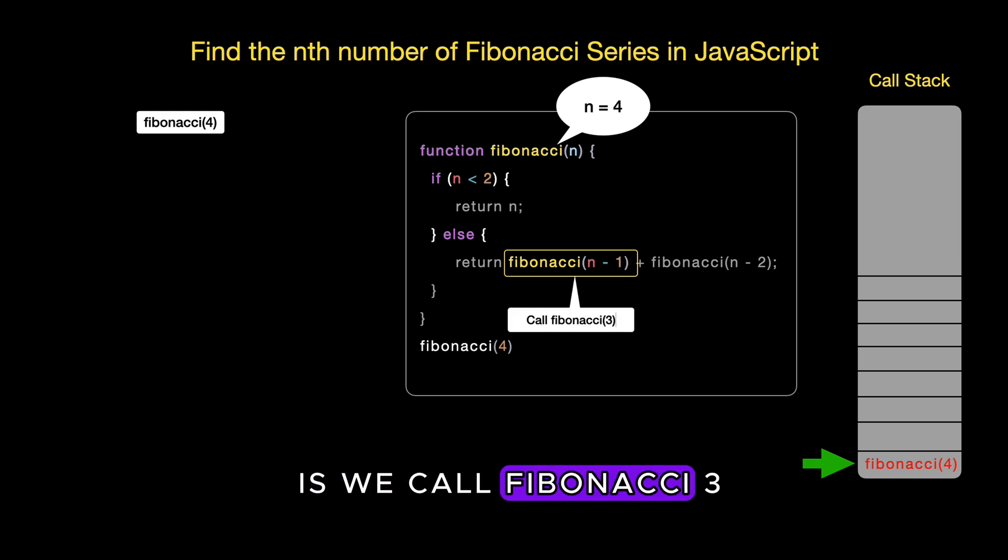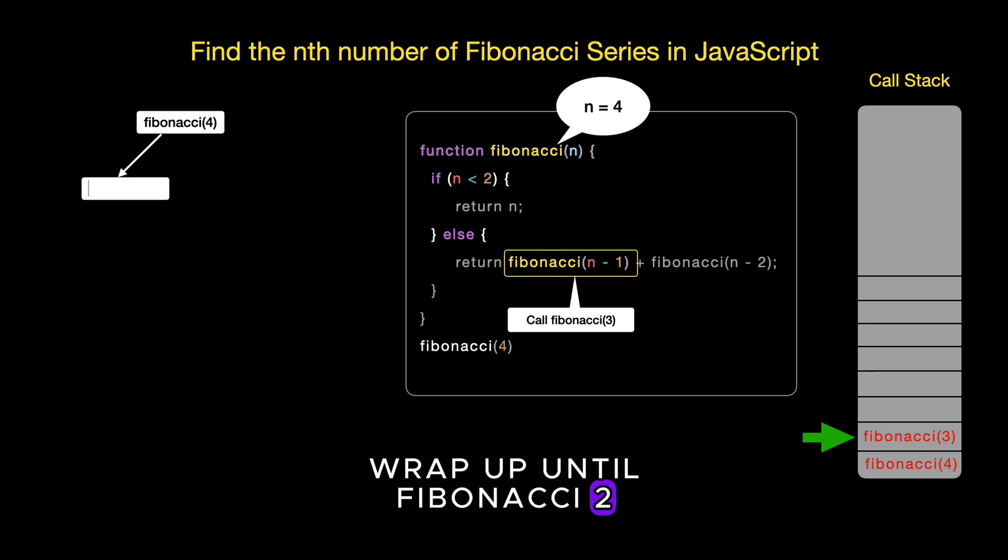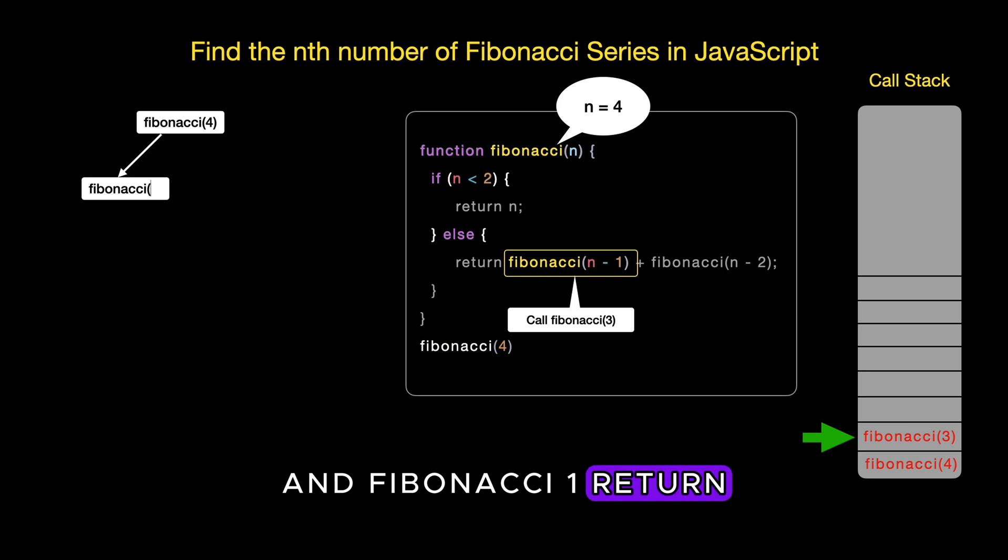So the next step is we call Fibonacci 3. So Fibonacci 3 goes onto the stack on top of Fibonacci 4. Remember, Fibonacci 4 can't finish until Fibonacci 3 and Fibonacci 2 are done.